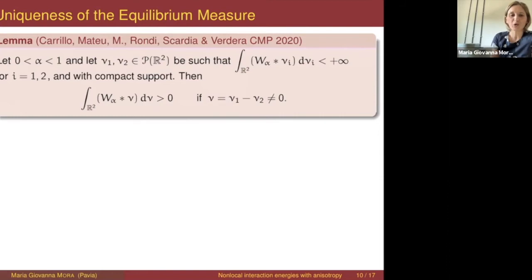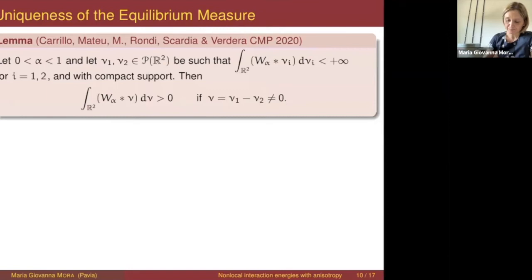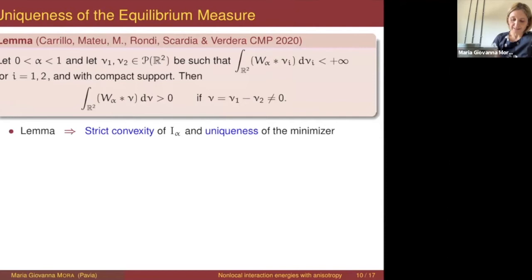Uniqueness is in general not easy to prove for these problems, and in this case it comes from the following lemma. Consider two probability measures having finite interaction energy and compact support, and look at the interaction on the difference of the two measures. You can show that this interaction energy on the difference has a sign — is always non-negative — and is strictly positive if the two measures are different. From this lemma it's not difficult to show that the energy is strictly convex, so strict convexity is enough to have uniqueness of the minimizer.